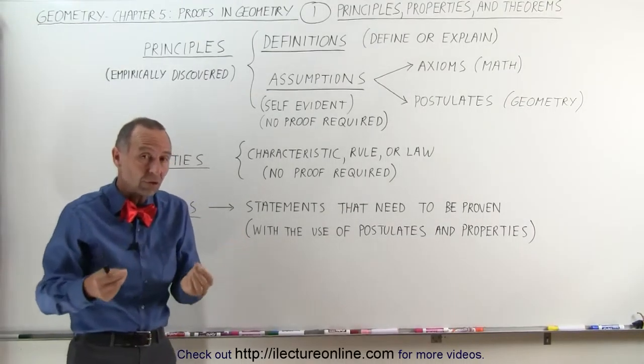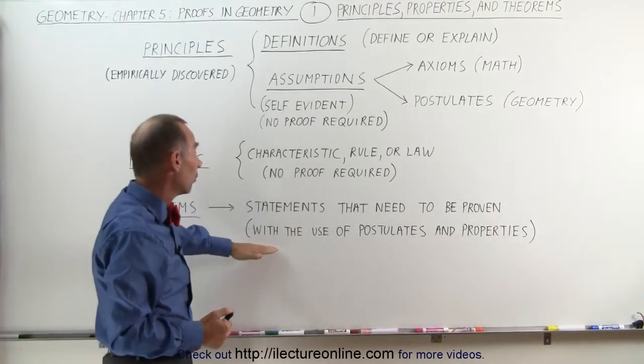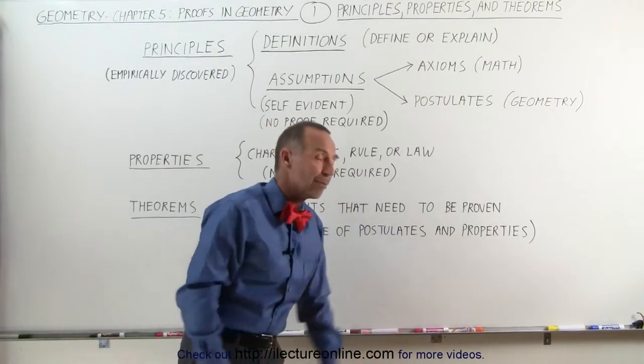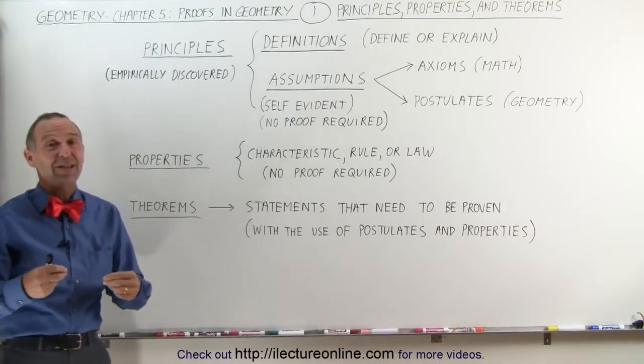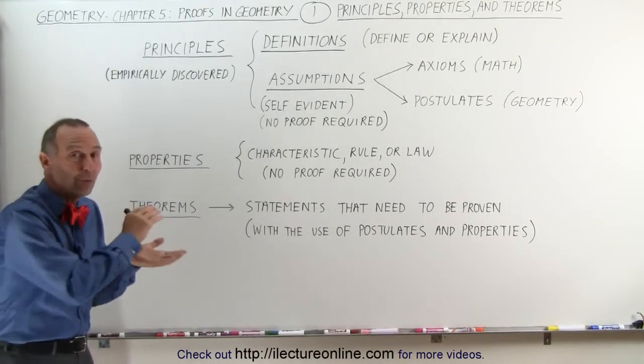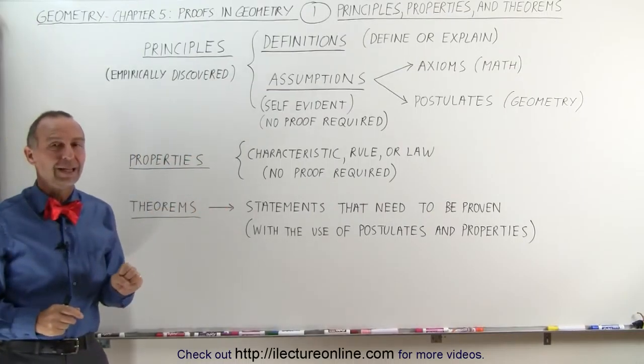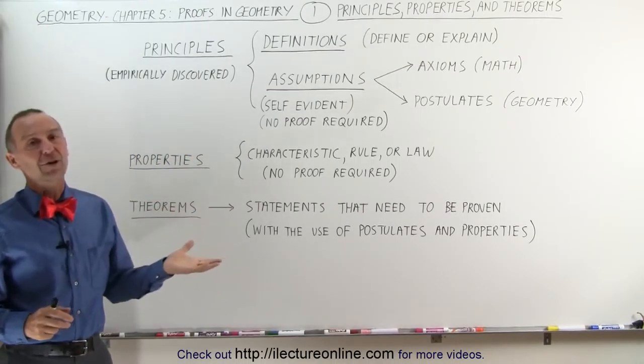For example, we want to be able to prove that two triangles are congruent. Well, how do we do that? Well, we're going to use a certain set of these postulates and properties in order to do so. So we then come up with a statement called a theorem and we're going to prove those theorems with the use of postulates and properties.